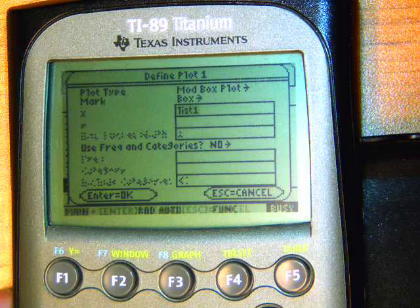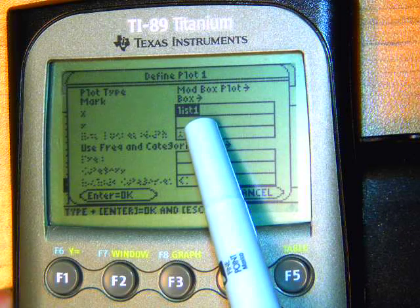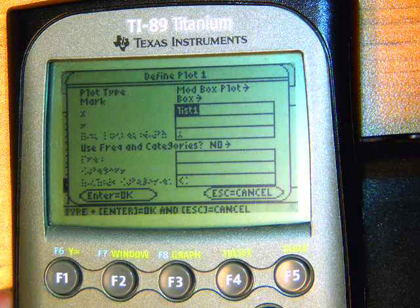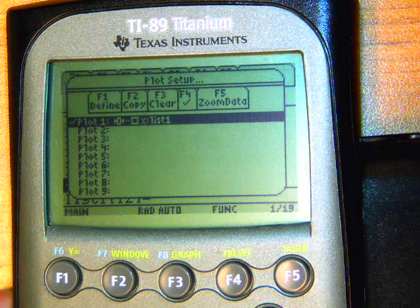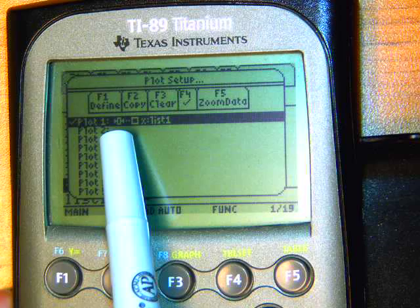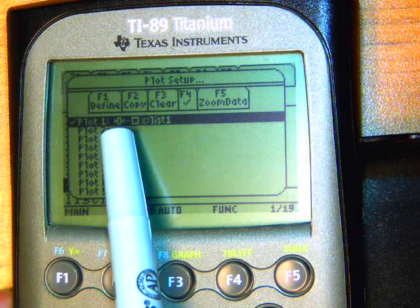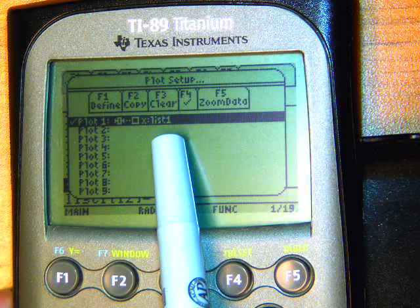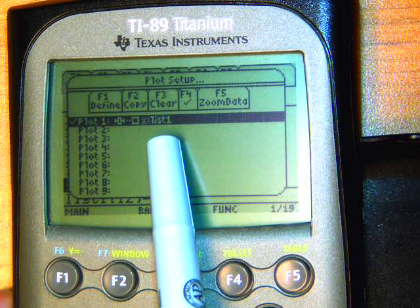I hit enter one more time. It's now highlighted on the list. Enter again. It's now going to do this OK. And hopefully you now should see what I have here with this little miniature box plot, and then it should say list 1 or whatever list that you're working in.